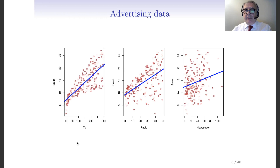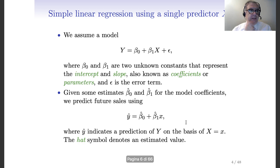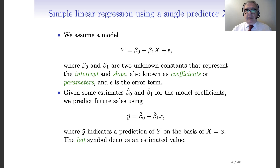Here we have the data: TV, radio, newspaper are the features, and sales is the target variable. We have three linear regressions — a first use of linear regression could be a regression of one variable against a single variable. Here we consider just TV expenditure, here just radio expenditure, here just newspaper expenditure. Let's start from linear regression with a single predictor. Our model can be written as y = β₀ + β₁x + ε.